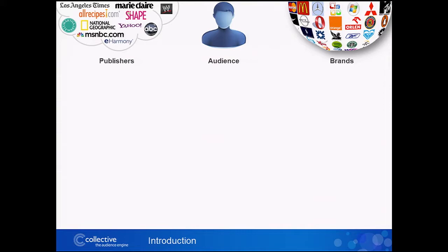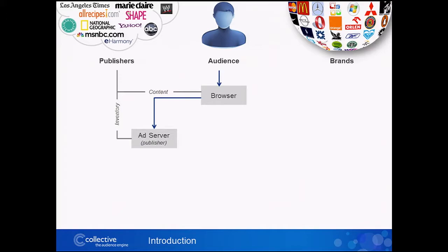A little overview and context for the problem we're addressing. In digital advertising there are basically three different constituencies: the publishers who are generating the content, the audience who's browsing the content, and the brands that want to reach that audience with a specific message. The audience goes to a browser, the publisher signals to their ad server that there's an opportunity to serve advertisements. The brand, working with an agency, creates a campaign with their own ad server specifying the creative, the targeting, and the number of impressions they want to deliver.